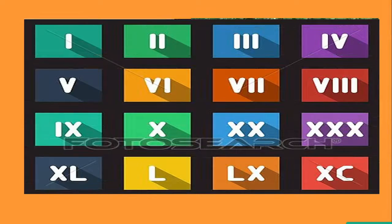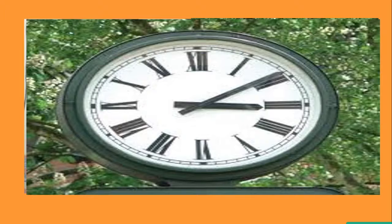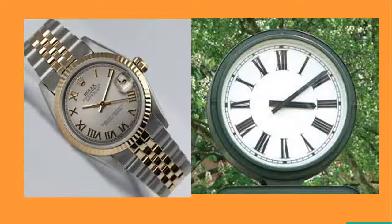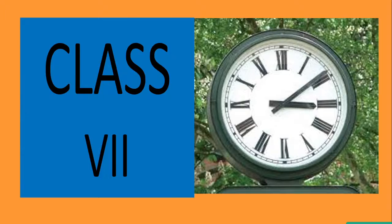Now let me explain the uses of Roman numerals. Roman numerals are used for ranking, such as first, second, and third. They are used on the dials of clocks and watches to represent the 12 hours in one cycle. Roman numerals are also used in writing class numbers like 5th, 6th, 7th, etc. Thank you.